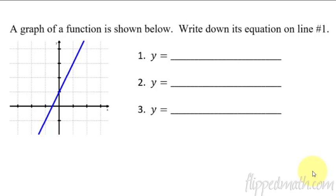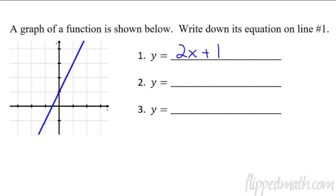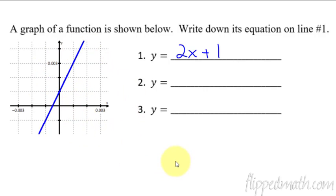To start us off, let's look at this little graph I have here. Please pause this video and write down on line number one what you think the equation is. Most of you probably would have written 2x plus 1, with a y-intercept at 1 and a slope of 2. But some of you might have been thinking: Mr. Bean, you didn't tell us what the scale is — there are no numbers written. So let me give you the scale. Now on line number two, write what the equation would be now that you can see the scale.